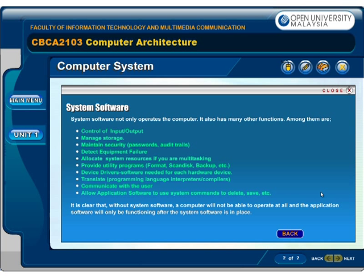Additional functions include software needed for each hardware device, translate programming language interpreters or compilers, communicate with the user, and allow application software to use system commands to delete, save, etc. It is clear that without system software, a computer will not be able to operate at all, and application software will only be functioning after the system software is in place.